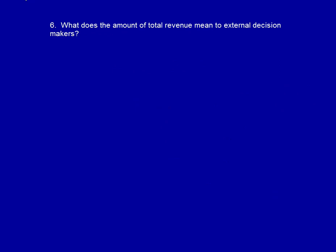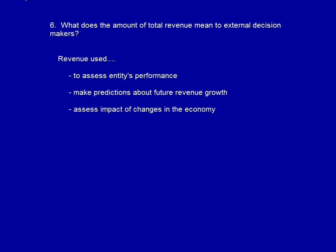What does the amount of total revenue mean to external decision makers? Every business depends on its revenues to ultimately increase the company's profit and ensure its continued growth. Businesses use current revenue figures to develop revenue improvement plans and to monitor the business's past performance. External decision makers — also called users or stakeholders — use this information to assess the business's performance and make predictions about future revenue growth. They will also use it to assess the possible impact of economic upswings and downswings and new trends. Revenues is one of the main factors in profitability and is an extremely important number for decision makers to watch.